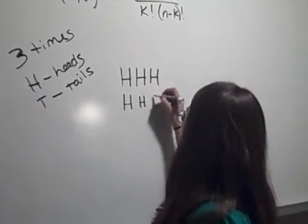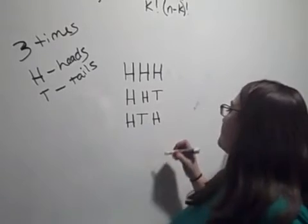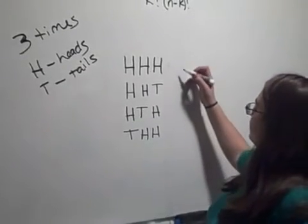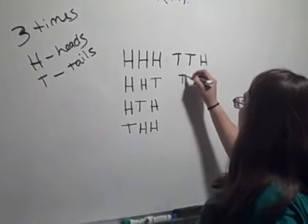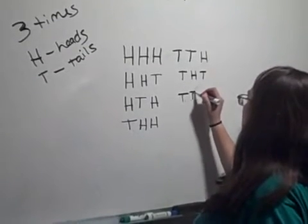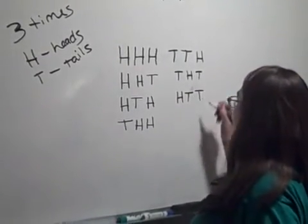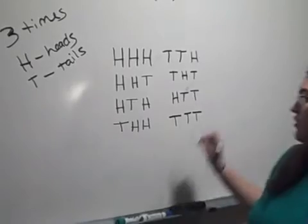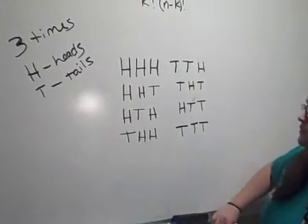The possible arrangements when flipping a coin 3 times are: heads-heads-heads, heads-heads-tails, heads-tails-heads, tails-heads-heads, heads-tails-tails, tails-heads-tails, tails-tails-heads, and tails-tails-tails. Those are all the possibilities and different arrangements that we have.